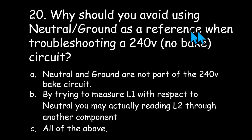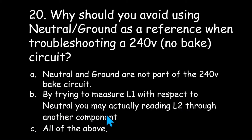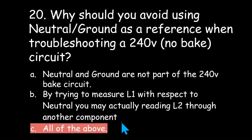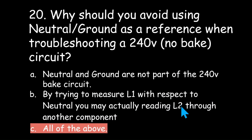Why should you avoid using neutral and ground as a reference when troubleshooting a 240 volt no-bake circuit? Neutral and ground are not part of the 240 volt bake circuit, or by trying to measure L1 with respect to neutral you may actually be reading L2 through another component like the bake element, or all the above? Neutral and ground are not part of the 240 volt bake circuit, so there's no reason to use them as a reference. By trying to measure L1 with respect to neutral, you might actually be reading L2 through back-feed through the bake element, making you think you have L1 when you're actually reading the other phase.